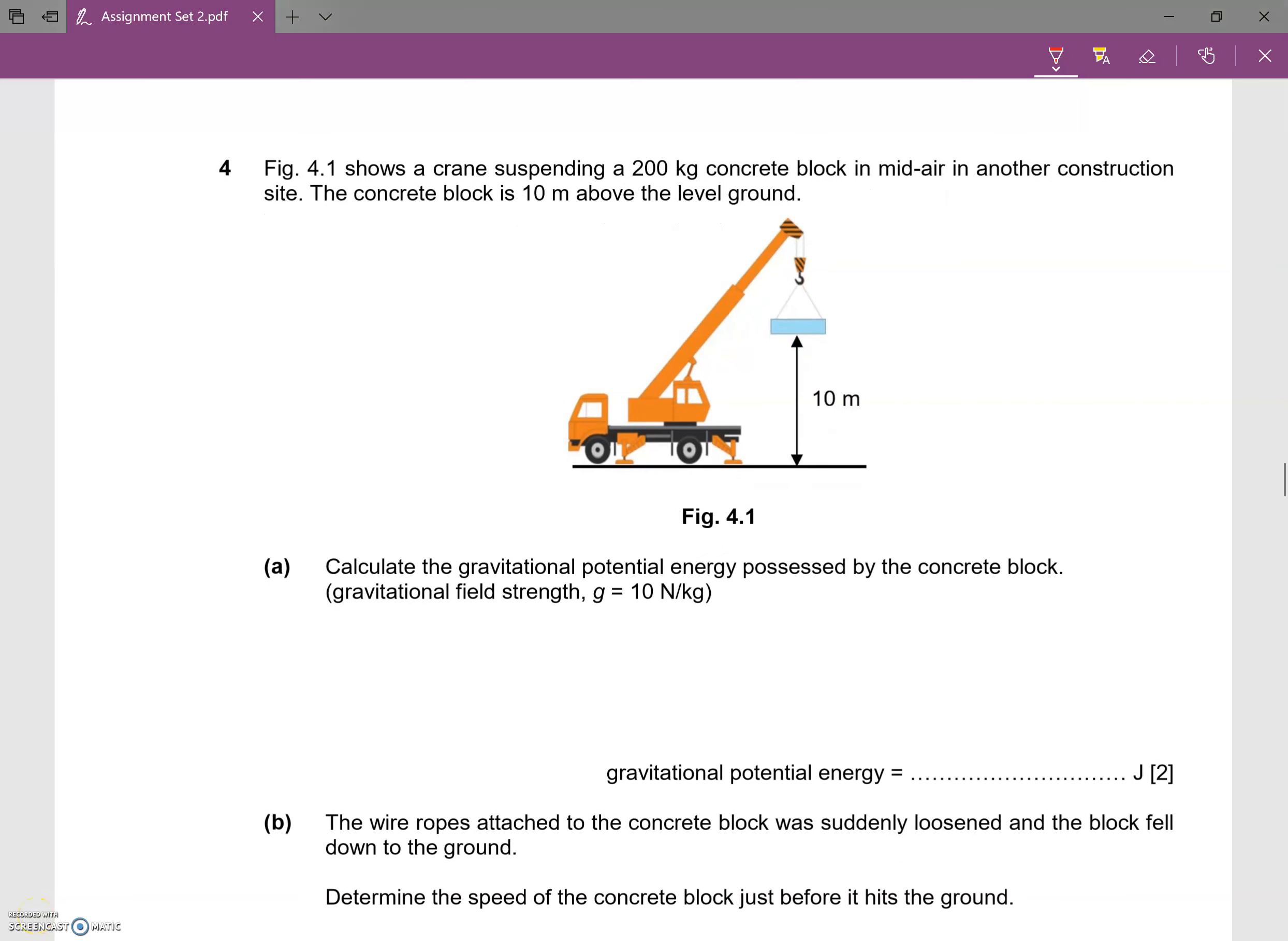Okay, now for question 4, figure 4.1 shows a crane suspending a 200 kg concrete block in mid-air at another construction site. The concrete block is 10 meters above the ground level, so this is the height.